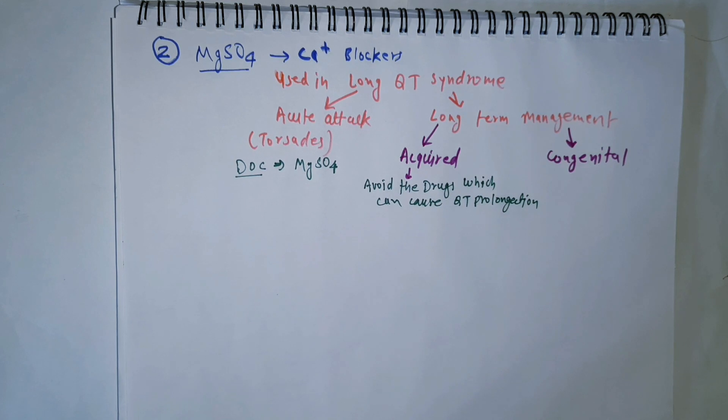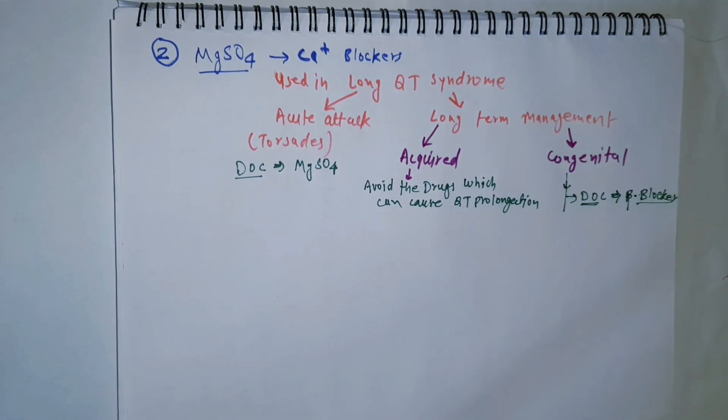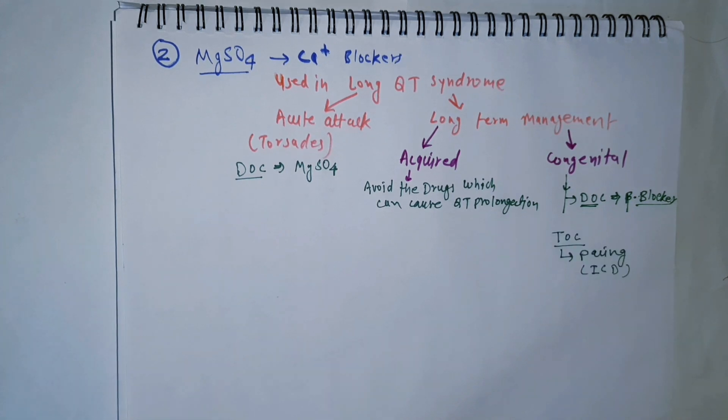In case of congenital conditions, our drug of choice is beta blocker, but the treatment of choice is pacing with ICD.